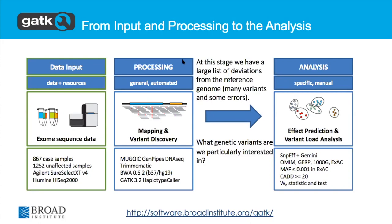Typically the way you implement something like that — the way we recommend — is that the processing step is one or more automated pipeline workflows where you process everything in the same repetitive way. The effect prediction can also be implemented as a pipeline. But the variant load analysis is a bit different — typically that's something you want to do interactively, where you're probing the data, applying certain analyses, producing tables, and sometimes making decisions about your next step as you go.